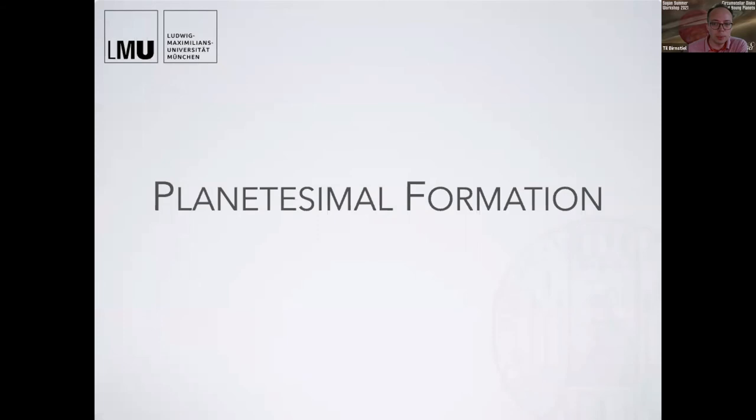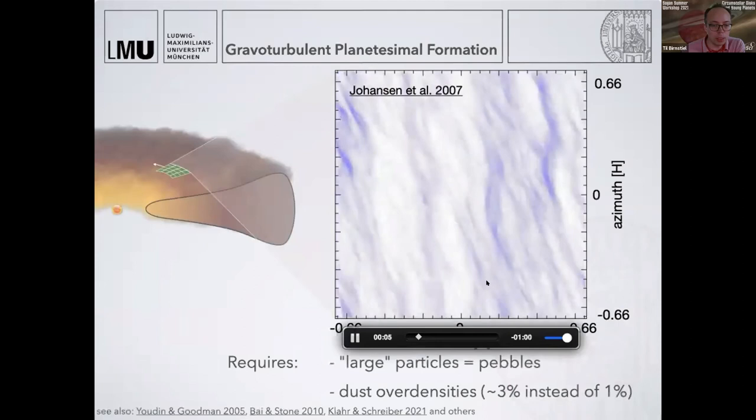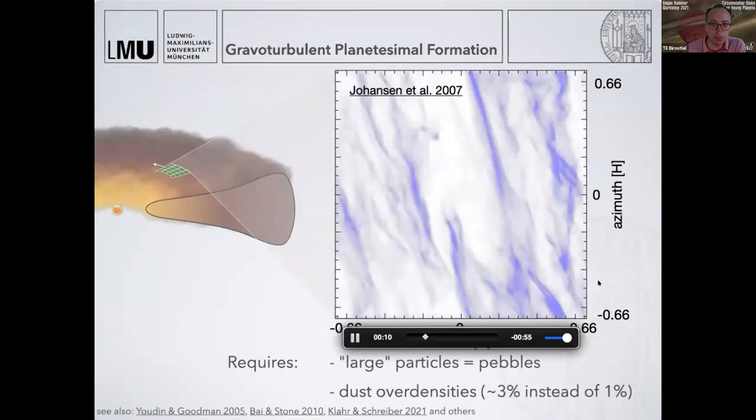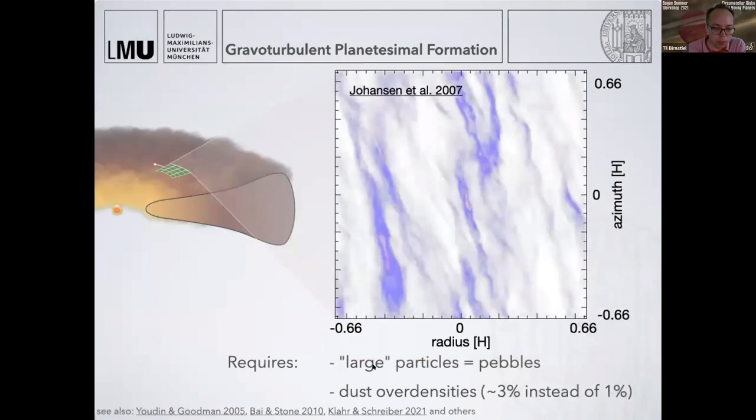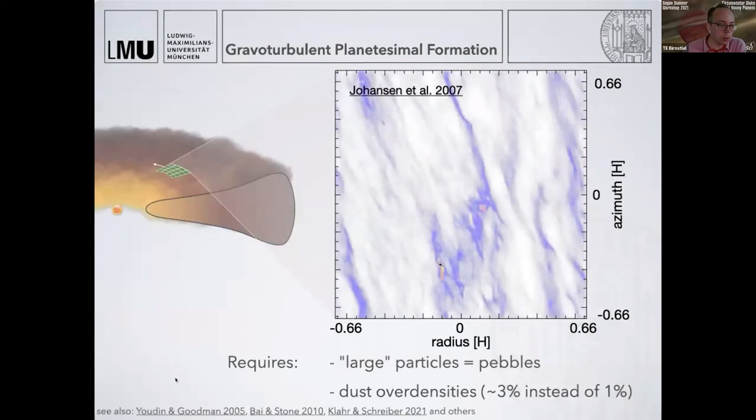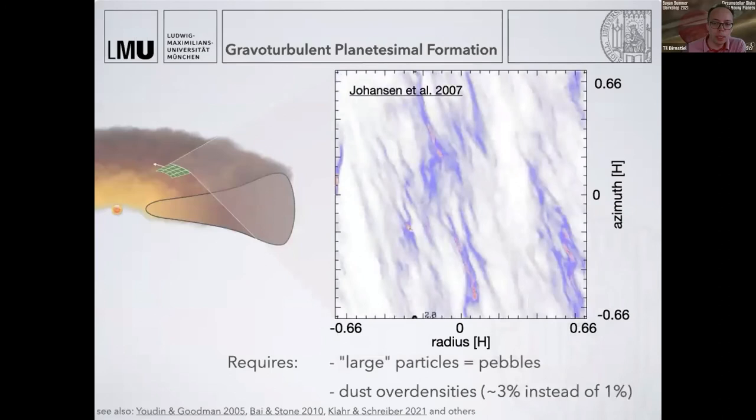To make planetesimals, we need some additional magic, and that is called the streaming instability. The streaming instability is basically an instability of a dust and gas mixture. Under the right conditions, it forms these filamentary structures, and some of these overdensities can become so dense that they collapse to gravitationally bound bodies—the planetesimals. But this doesn't really work just by itself. It needs the right conditions: you have to have already particles that we would call pebbles, and you need to create an overdensity. If you want to learn more about this and how it works, I encourage you to look at the full talk.